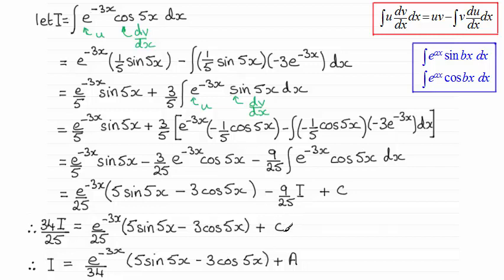And if I multiply the constant c by 25 and divide by 34, I get another constant which I've called A. So I hope you've been able to get that. If not, at least been able to see where you might have gone wrong.